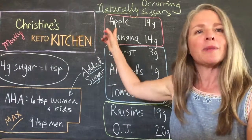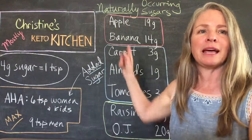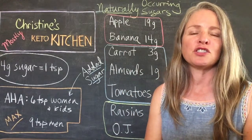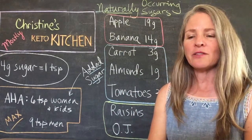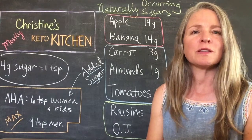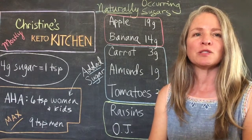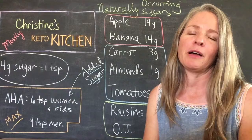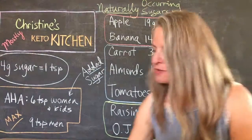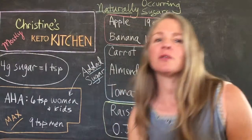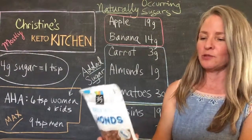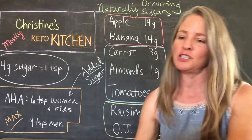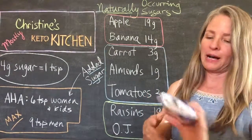A medium apple and a medium banana have around 19 and 14 grams of sugar respectively. Carrots are one of the sweeter vegetables, but a medium-sized carrot only has about three grams of sugar. Almonds do have some sugar, but it's just one gram, so that's not so much.